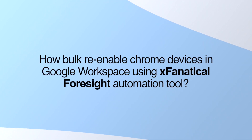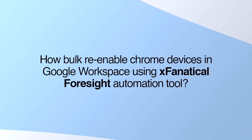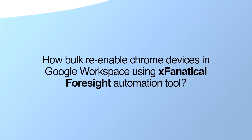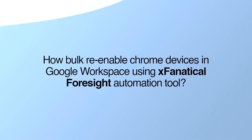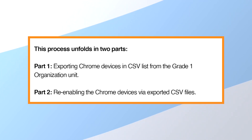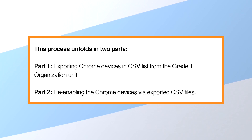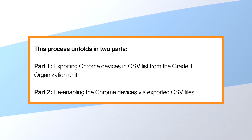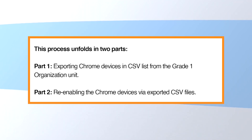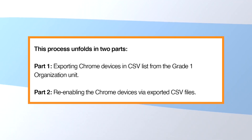How to bulk re-enable Chrome devices in Google Workspace using XFanatical Foresight Automation Tool. This process unfolds in two parts: Part 1, exporting Chrome devices in a CSV list from the Grade 1 Organization Unit, and Part 2, re-enabling the Chrome devices via exported CSV files.